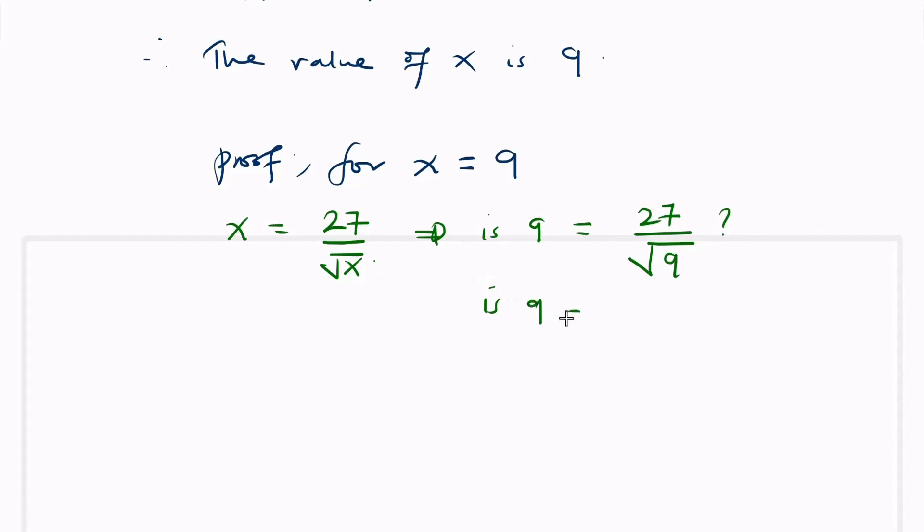So is 9 equal to 27 divided by 3? Because the square root of 9 is 3, and we're taking the positive one. So is it equal? Yes.